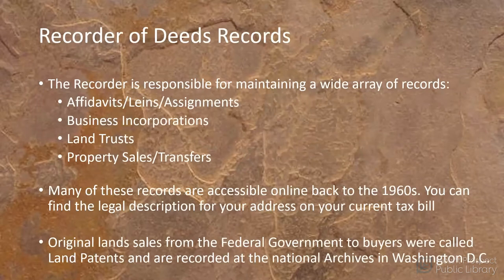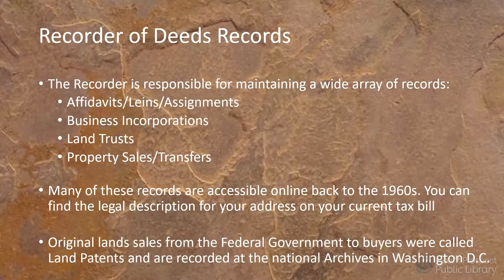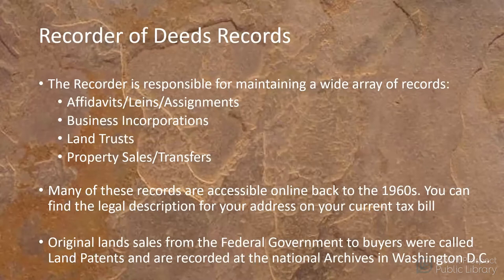The recorder of deeds — in Cook County now called the county clerk — will have deeds and mortgages, land trust property sales and transfers, sheriff sales, affidavits, and liens. If somebody has their house renovated and doesn't pay their bill, the contractor can put a lien on the house so it can't be sold until they're paid. There's more than just deeds and mortgages available at the recorder's office, so it's worth digging into these records further.